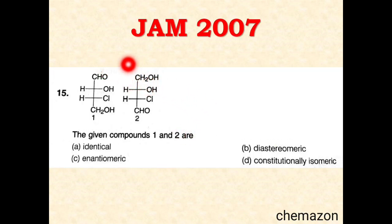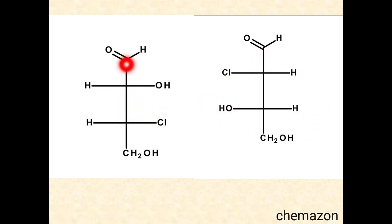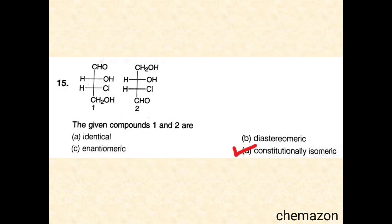Here is another question from the JAM 2007 paper. Two molecules are given and you have to find out whether they are identical, diastereomeric, enantiomeric, or constitutionally isomeric. When the second molecule is rotated 180 degrees in plane, starting numbering from the aldehydic group, the second position has a hydroxyl group in the first molecule but a chloro group in the second. At the third position it is chloro in one and hydroxy in the other. The bond connectivity is different, so these are constitutional isomers. The correct answer is option D.